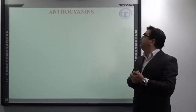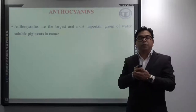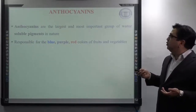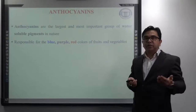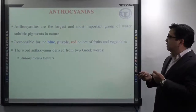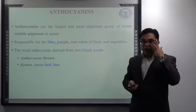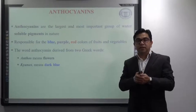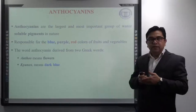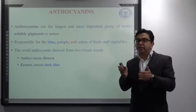So first we will start with anthocyanins. Anthocyanins are the largest and most important group of water-soluble pigments available in nature, and they are mainly responsible for providing blue, purple, and red colors to fruits and vegetables. The word anthocyanins is mainly derived from two Greek words where 'antho' means flower and 'kyanos' means dark blue. Even though the name implies blue color, anthocyanins are also responsible for providing various other colors like purple and red. The color of anthocyanins is mainly pH-dependent, which we will discuss in detail under the chemistry of anthocyanins.